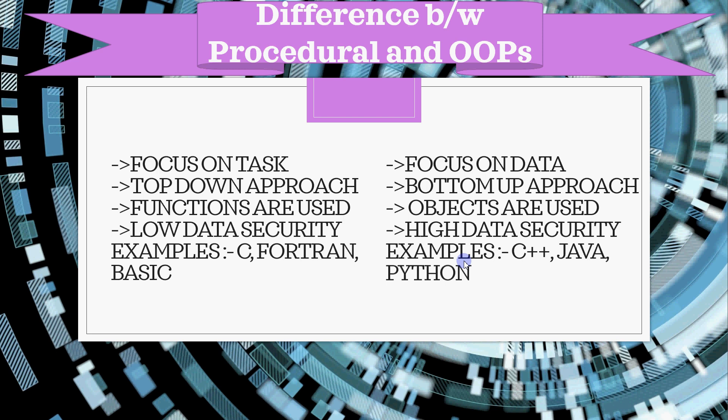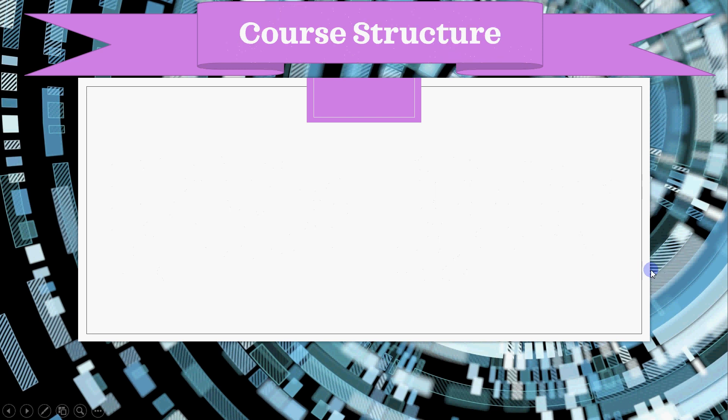Data security is reduced in procedural language — there is no focus on securing data, and you cannot put strong security restrictions on procedures. But in object-oriented programming, high data security is possible. Examples of procedural languages are C, Fortran, and Basic. Examples of OOP languages are C++, Java, Python, and VB.net — VB 6.0 is procedural but VB.net is object-oriented. Those were the basic differences between procedural and object-oriented language.